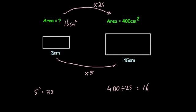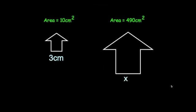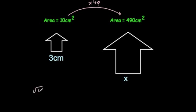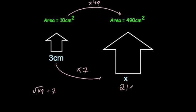Just a reminder: whenever you multiply the sides by 5, the areas would be 25 times bigger — 5 squared. This time they've told us the areas of the two shapes and the base of the smaller one is 3, and we want to find the base of the larger one. To get from area 10 to 490, you'd multiply by 49, so the areas are 49 times bigger. We square root 49 to find how many times bigger the sides are — the square root of 49 is 7. The sides are enlarged by a scale factor of 7, so we times 3 by 7 to get the base of the larger one: 21 centimetres.